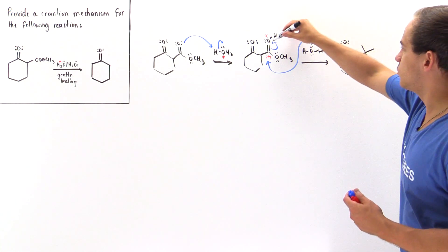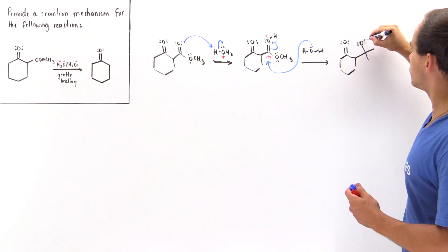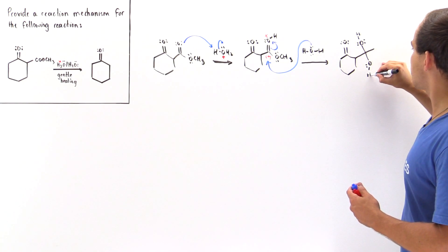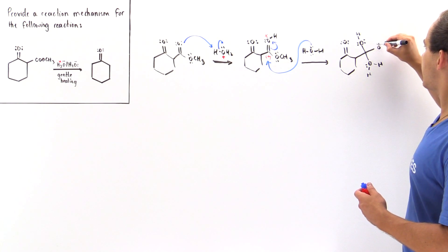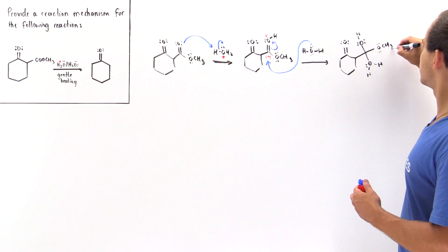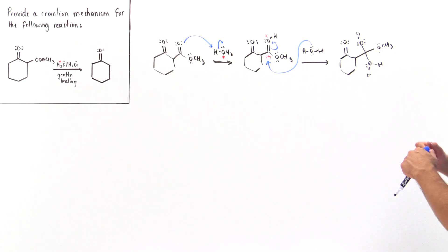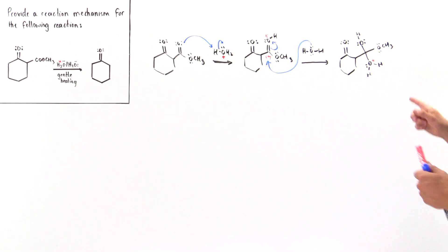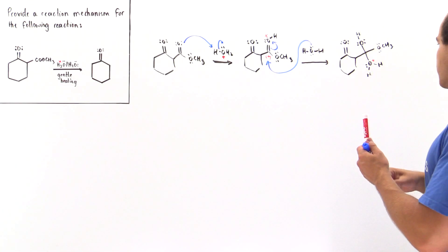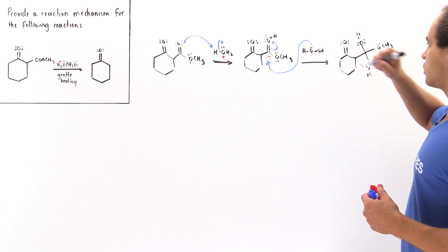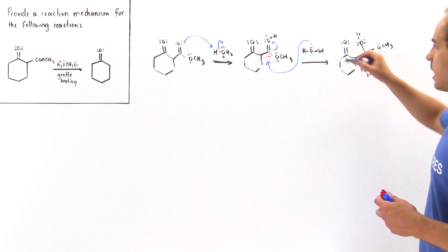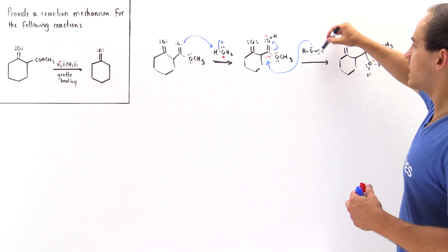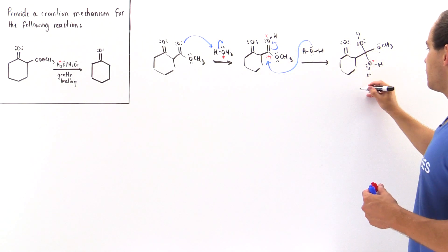We form this tetrahedral intermediate. We have our hydroxy group on one side, we have the water group on the other side, and we have our methoxy group here. We have a positive charge on this electronegative oxygen. We form just this tetrahedral intermediate, because water acts as a nucleophile.